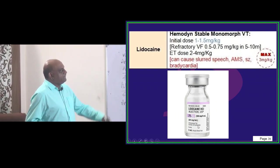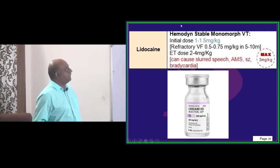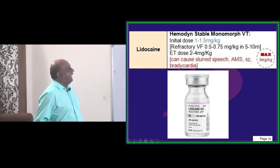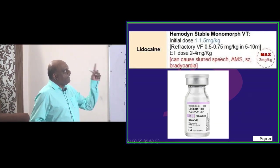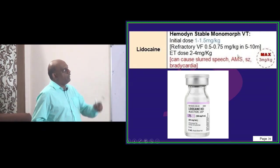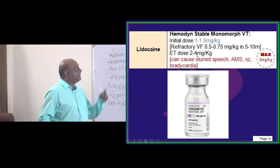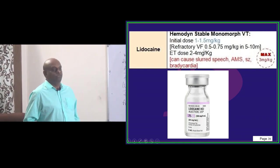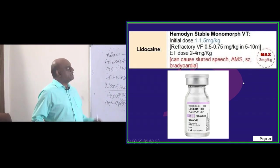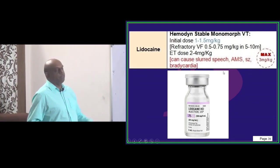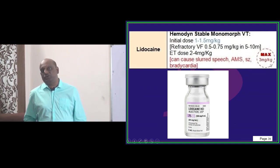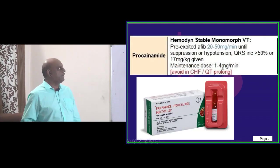You get 20 mg per ml 2% lidocaine like this. So initial dose is 1 to 1.5 mg per kg body weight and if it is refractory VF then 0.5 to 0.75 mg per kg in 5 to 10 minutes and endotracheal tube if you are putting 2 to 4 mg per kg. Lignocaine can cause a slurred speech. It can lead to development of bradycardia, seizures, etc. Maximum is 3 mg per kg is the dosage of lignocaine is what you are going to remember.